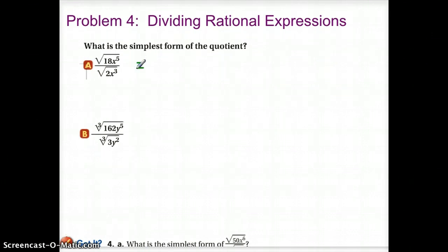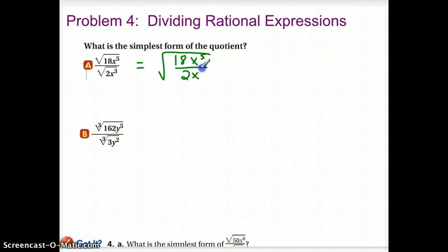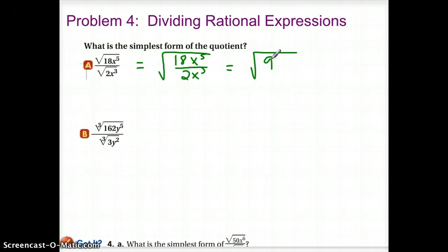For letter A, we're going to put this together under one big square root. We've got 18x to the 5th divided by 2x cubed. If we simplify inside that square root first, we are going to end up with the square root of 9 — since 18 divided by 2 is 9 — and x to the 5th divided by x cubed gives us simply x squared. Both of those end up being perfect, so we end up with 3x for our final answer.